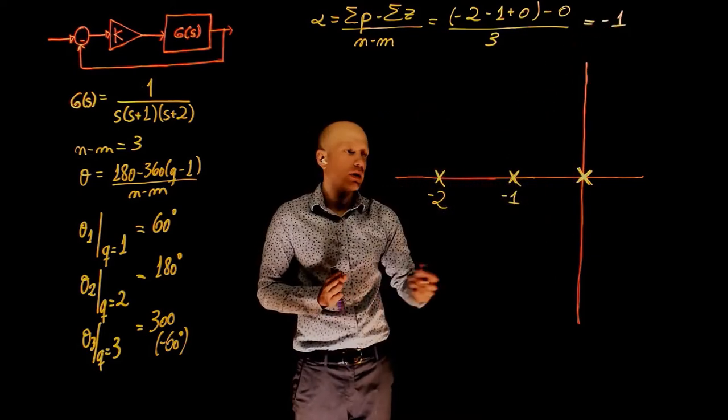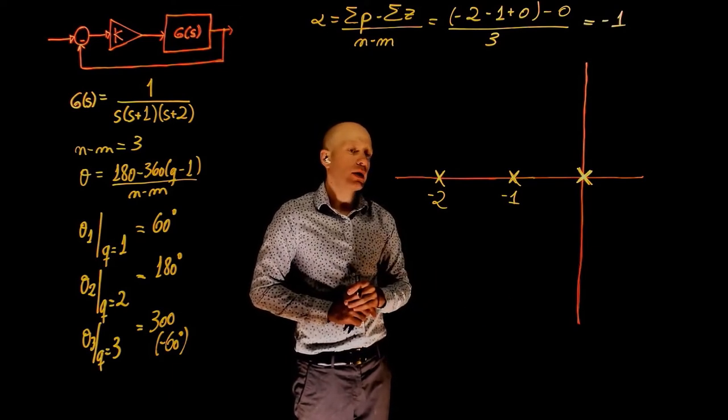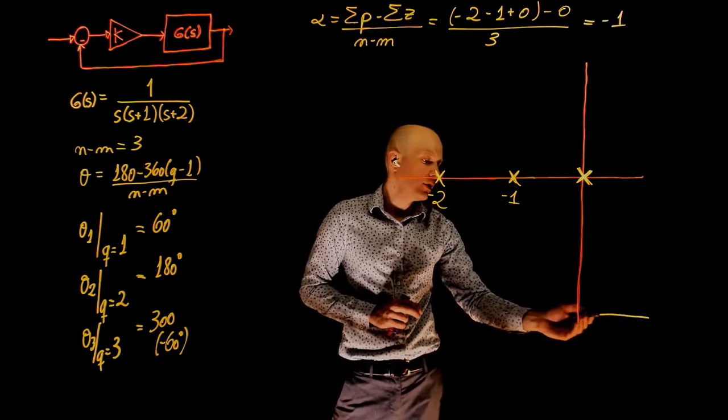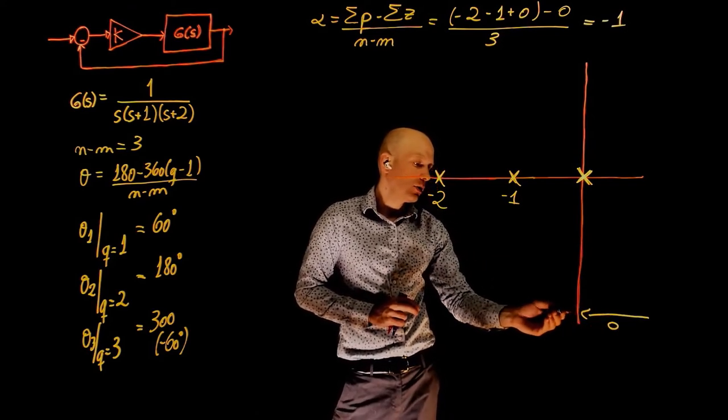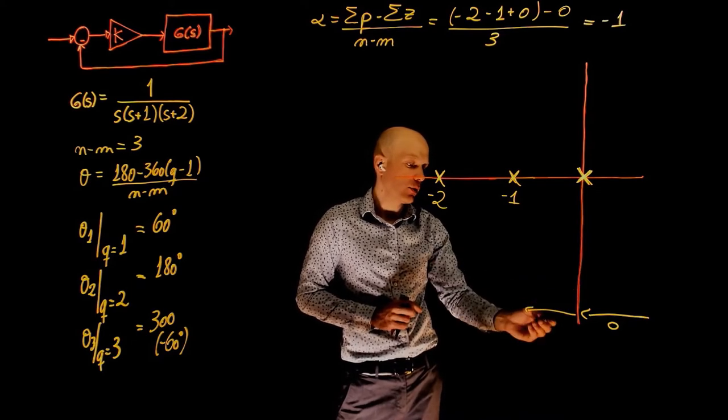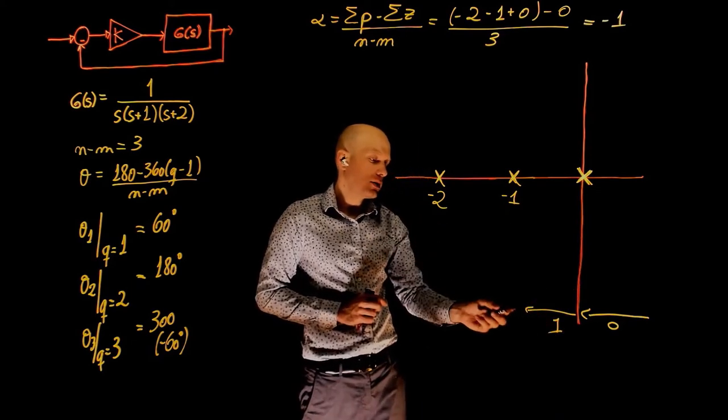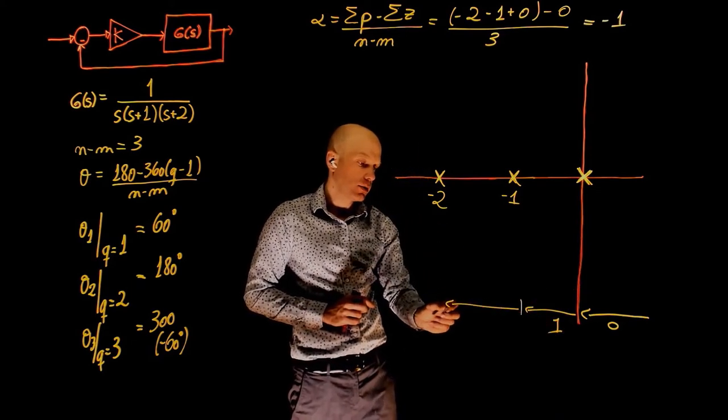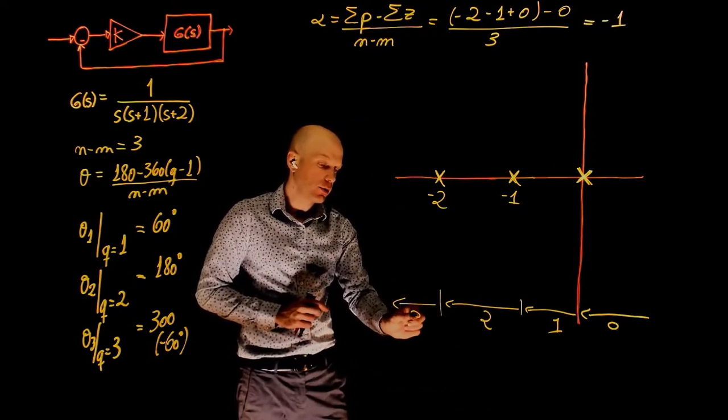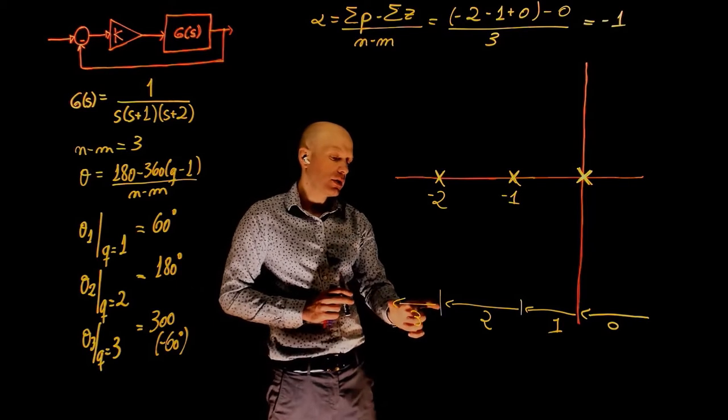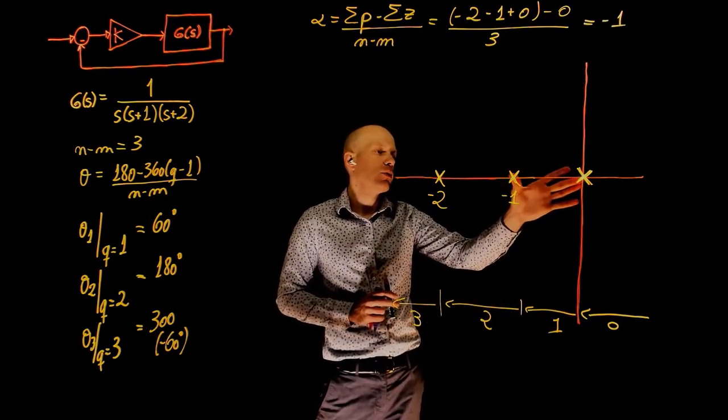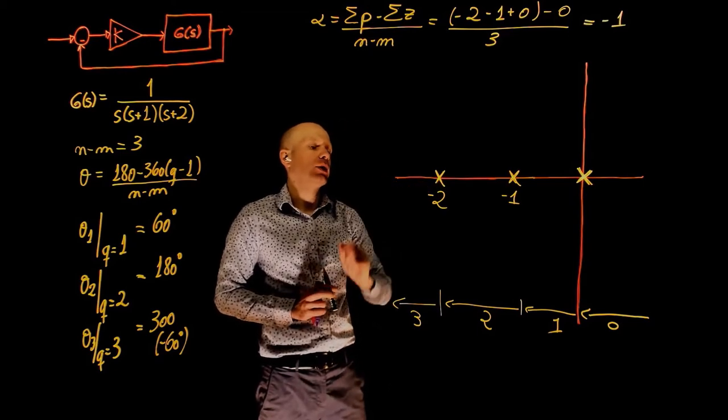Now let's determine the segments of the real axis that have a root locus. As you start counting from positive infinity, the count here is 0. The count now between these two poles is 1. We just encountered one pole. Past this negative 1, now the count becomes 2. And past negative 2, the count becomes 3. The odd segments are this one and this one. So the root locus exists between these two poles and to the left of the pole at negative 2.